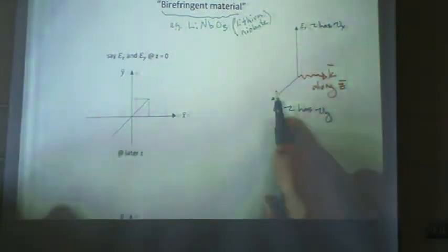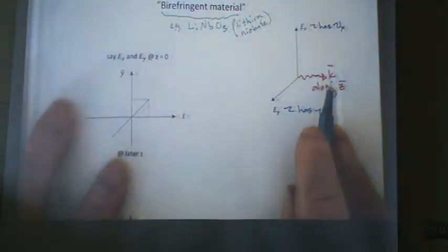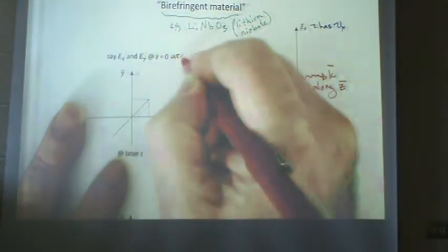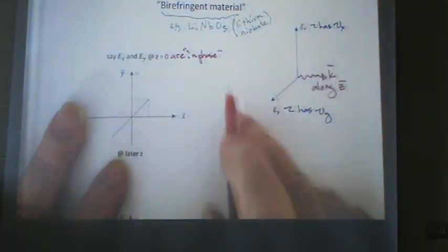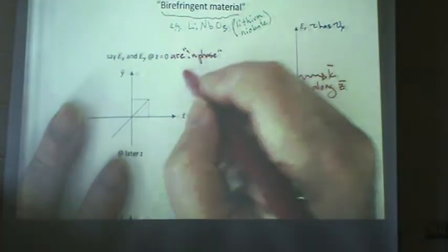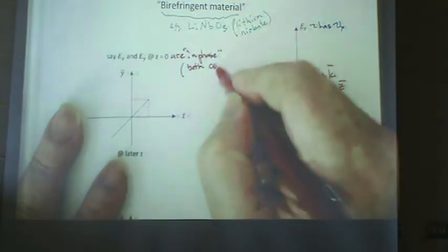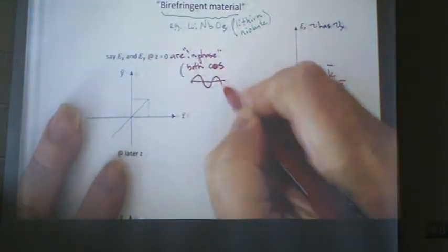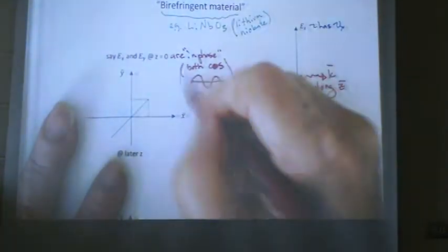So let's take a look at z equals zero at the input of this birefringent material. Then, say at that point, e_x and e_y are in phase. In phase means when one's up, the other's up too. If one's cosine, the other's cosine. If one's sine, the other's sine.